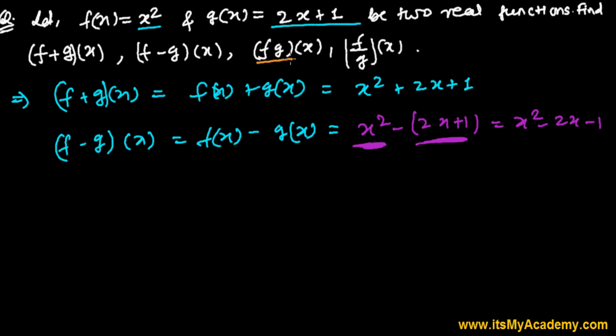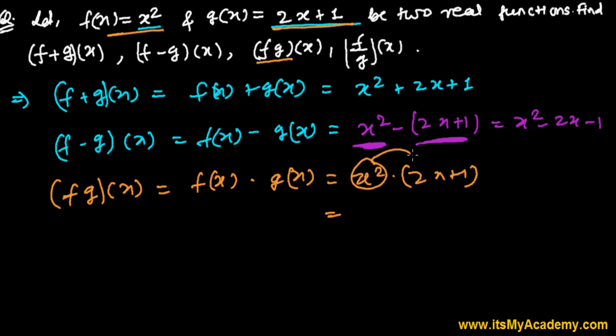Further, now we have the product of the functions, (f·g)(x). So it's going to be f(x) times g(x). f(x) is x² times g(x), which is 2x + 1. So when x² multiplies 2x you'll get 2x³, and when you multiply 1 you'll get x². So (f·g)(x) = 2x³ + x².